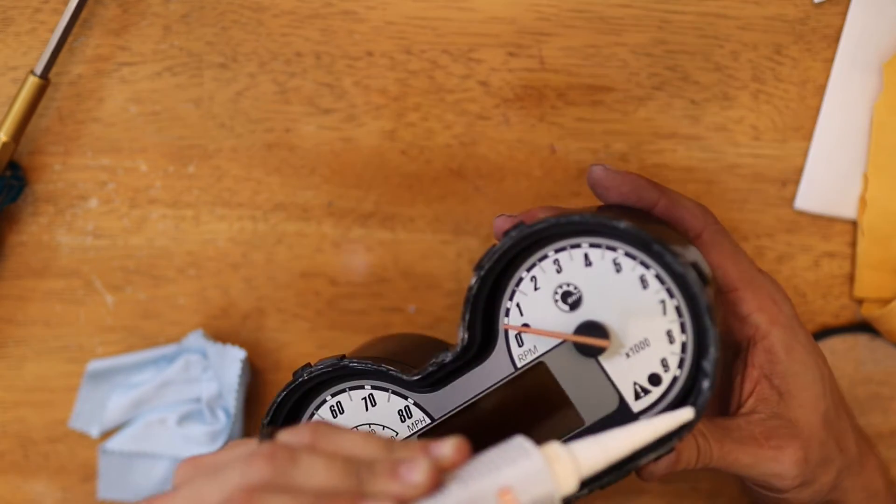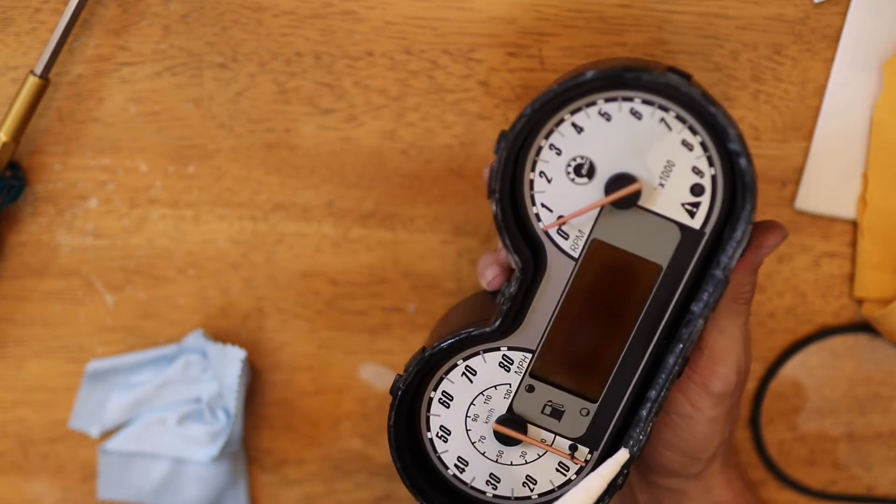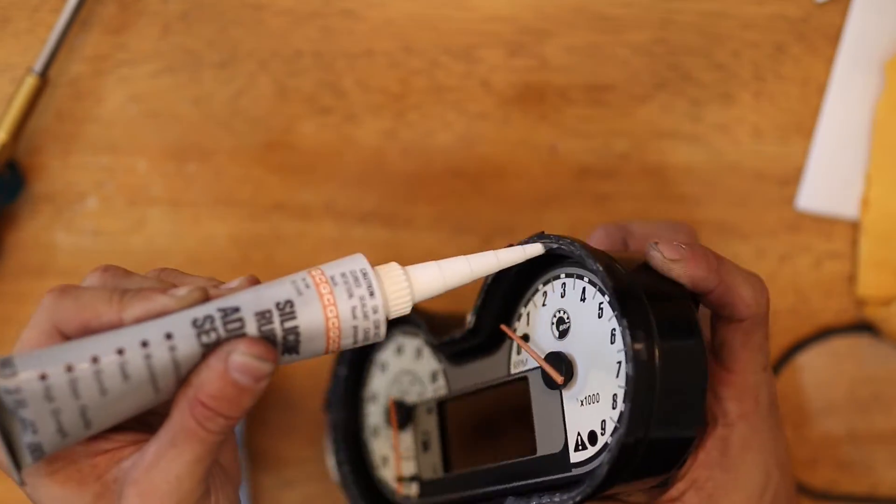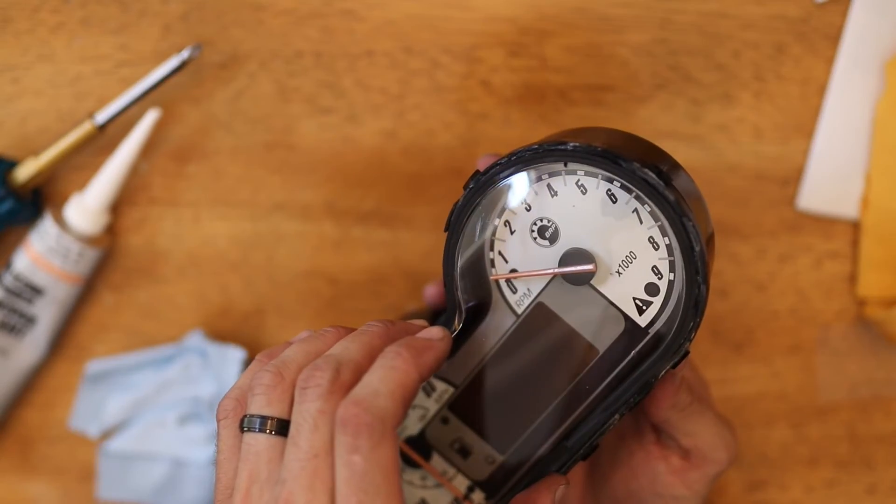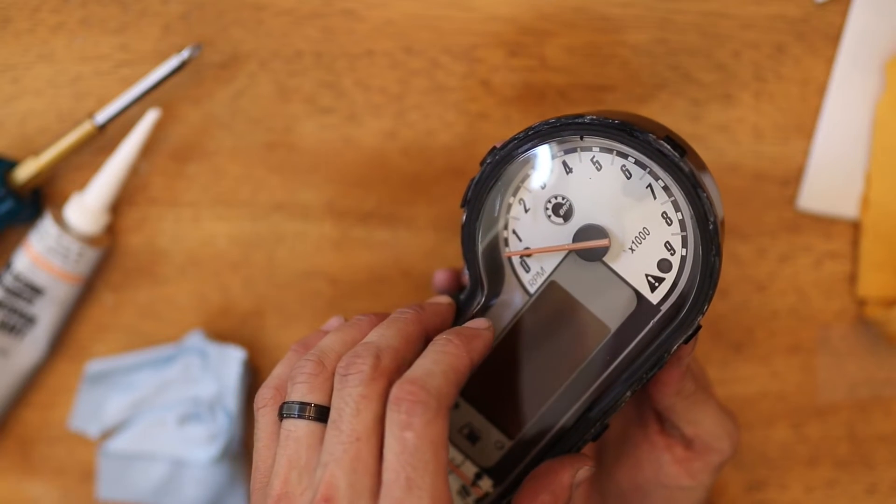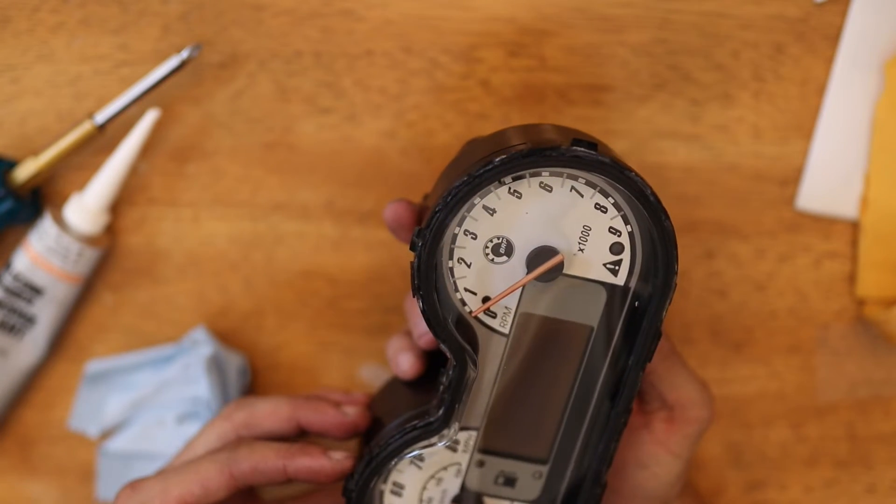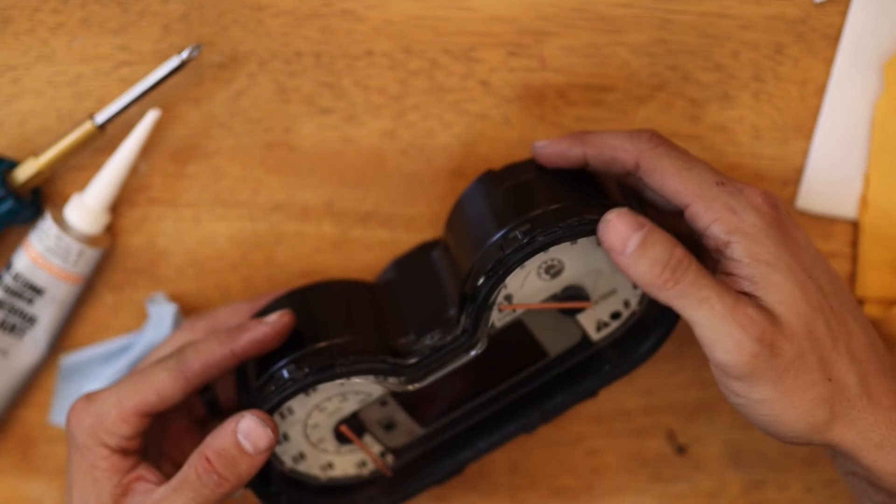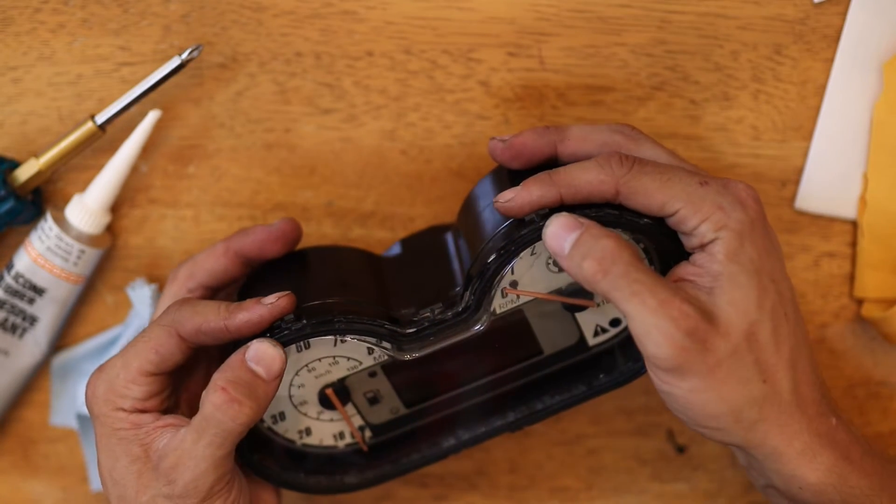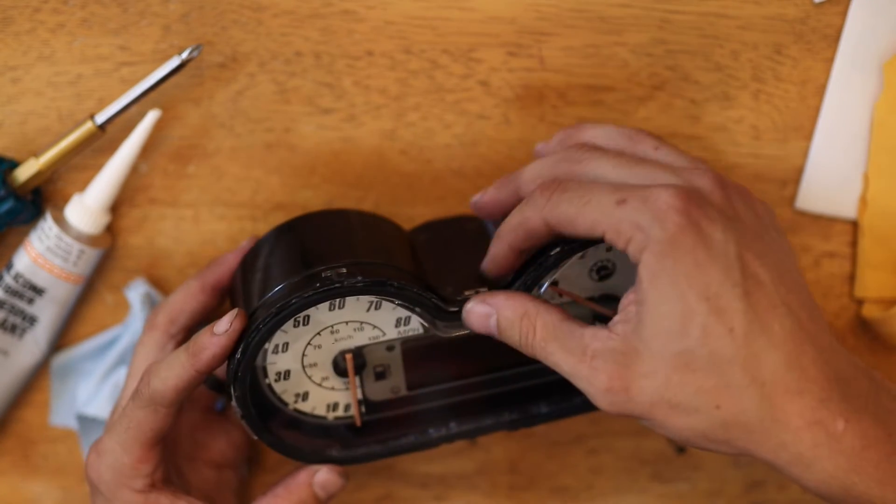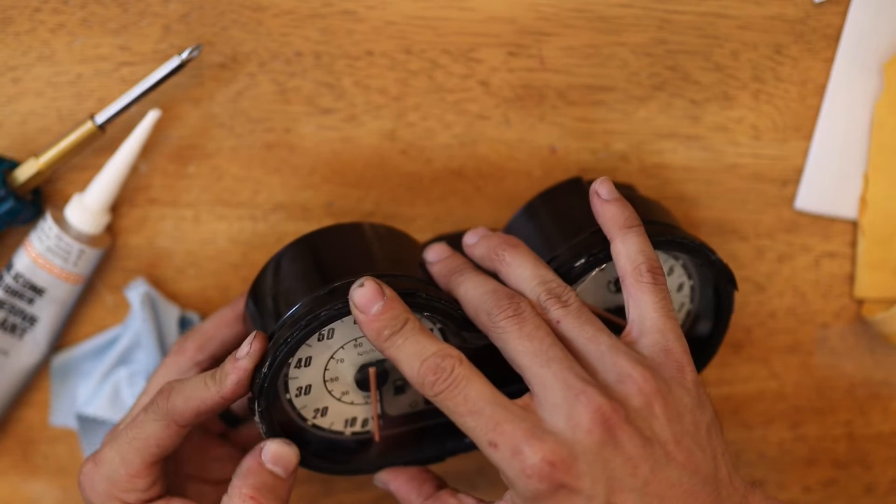To seal everything back up, I simply used a silicone adhesive all the way around the housing. Placed that first plastic on after I cleaned it up really well. Even though I tried to use just a small bead, I ended up having too much adhesive and had to take it off and wipe off some of the extra adhesive.